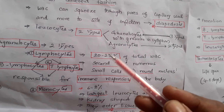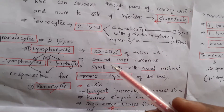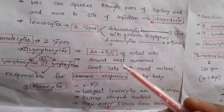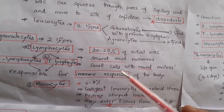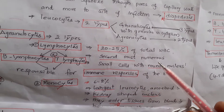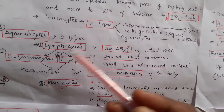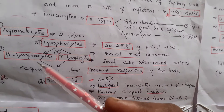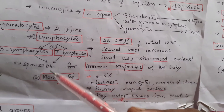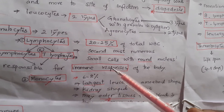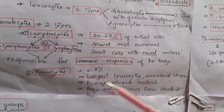Agranulocytes are lymphocytes and monocytes. Lymphocytes constitute about 20 to 25 percent of total WBCs and are the second most numerous. They are very small cells with a round nucleus. Lymphocytes are of two types: B lymphocytes and T lymphocytes, which are responsible for the immune response of the body.